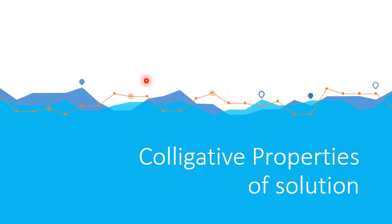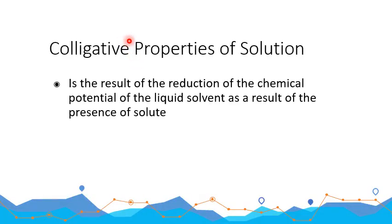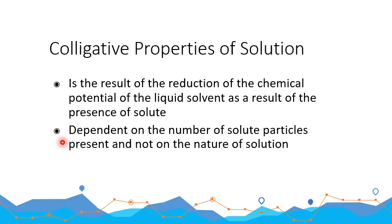Good day class and welcome to Colligative Properties of Solution. Colligative properties of solution are the properties that result from the reduction of the chemical potential of the liquid solvent as a result of the presence of a solute. When you make a solution, you break the interaction of your pure solvent and insert a solute, thereby breaking the interaction between solvent molecules. This results in our colligative properties of solution.